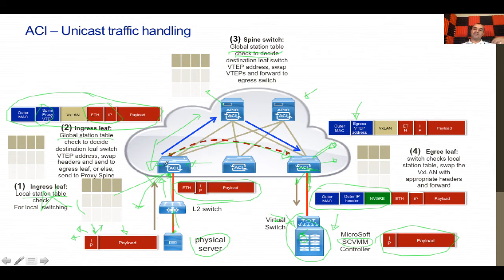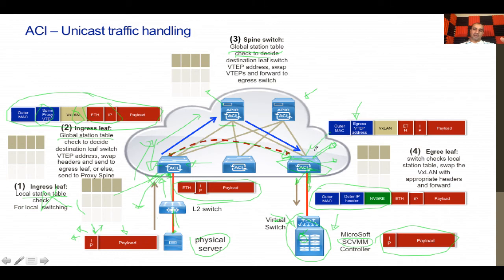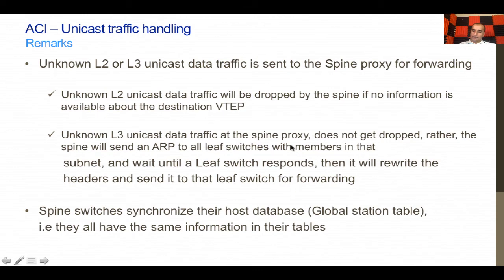If the ingress leaf switch did not find the virtual machine in its global station table and sent the packet to the spine proxy instead, the policy is not implemented at the ingress leaf. However, when the spine sends the packet to the egress leaf switch, the source EPG of the physical server is included in the VXLAN headers. The egress leaf switch knows which EPG the virtual machine belongs to, so it applies the policy there. This is important to remember when analyzing traffic flows.